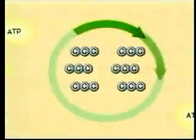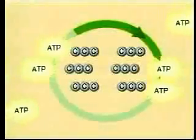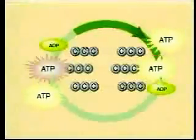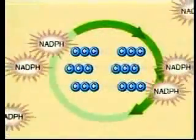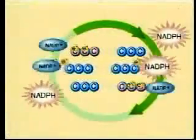Each of these molecules splits in half, forming six three-carbon molecules called PGA. Six ATPs must be spent to energize the six PGAs. Then, six NADPHs must be spent to energize the PGAs still further.